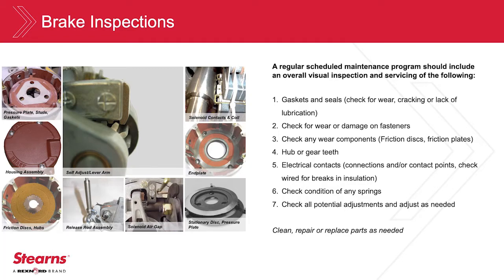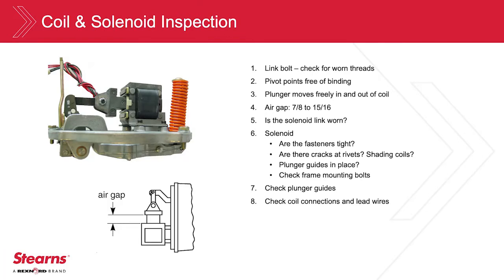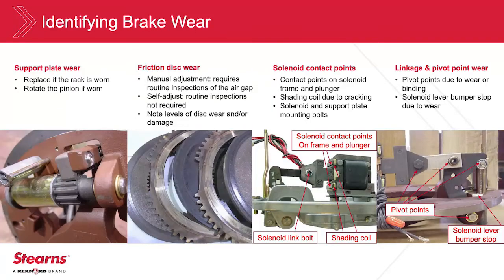Each facility should determine their own maintenance program depending on their application and operations. For solenoid-actuated brakes or NEMA AC motor brakes, at least an annual inspection of the electrical contact points of the solenoid should be conducted. All friction brakes require adjustment to compensate for friction disk wear. Manual adjust brakes require routine air gap inspections and adjustments, while self-adjusting brakes do not require these same routine adjustments, preventing the associated downtime. The friction disk image shown here demonstrates levels of wear and damage when the motor has driven through a set brake. The first indication is often smoke emitted from the brake.